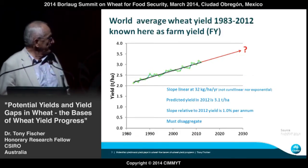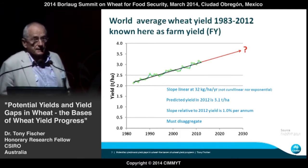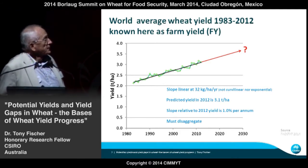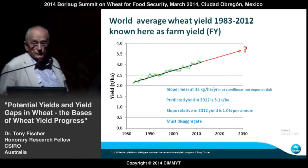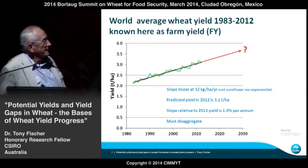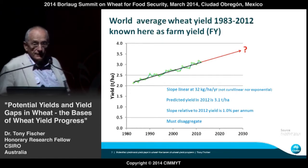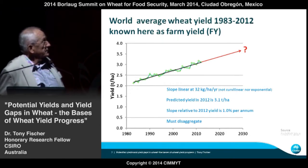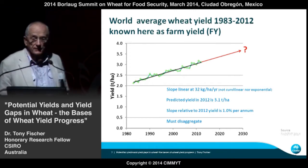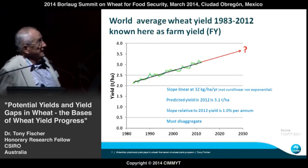We've seen this figure for global wheat yield over the last 20 years. The slope represents predicted yield; 2012 is 3.1 tons per hectare. It's linear — not exponential, not curvilinear — incredibly linear. The best way to understand that slope is to express it relative to the yield in 2012: about 1% per annum increase in yield. We need to disaggregate into countries and regions to see what might be heading us in the next 20 to 40 years.